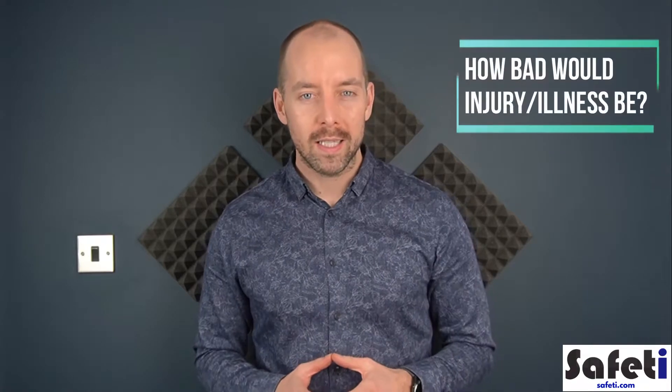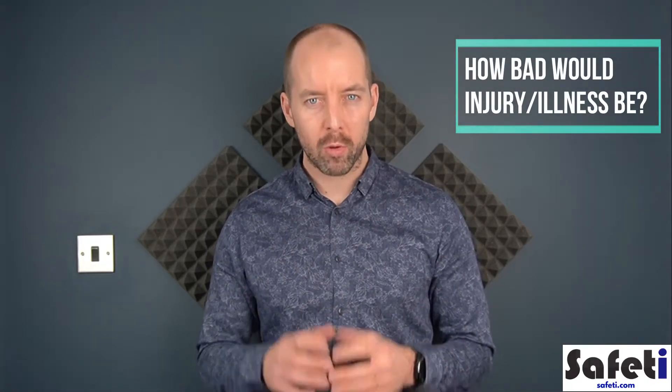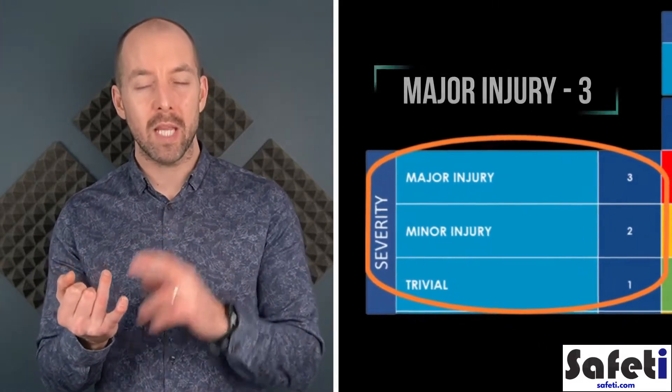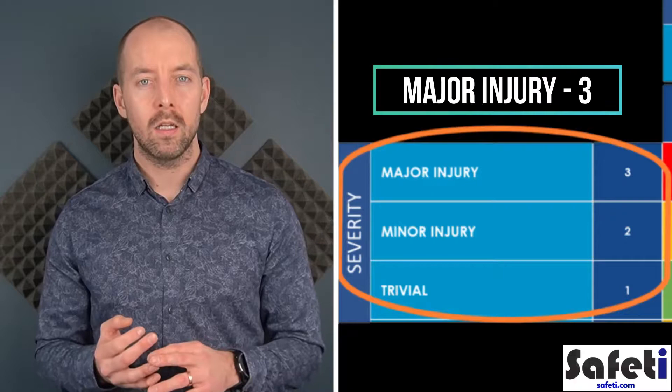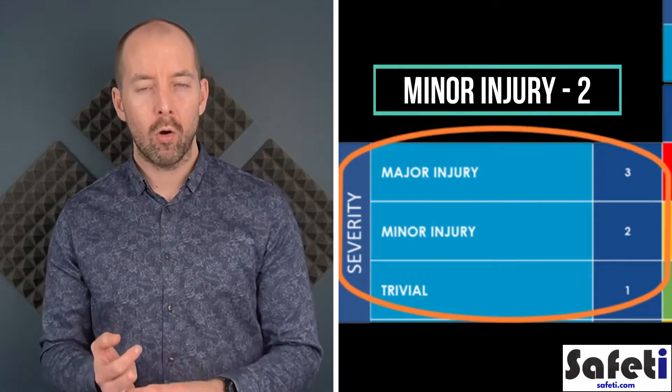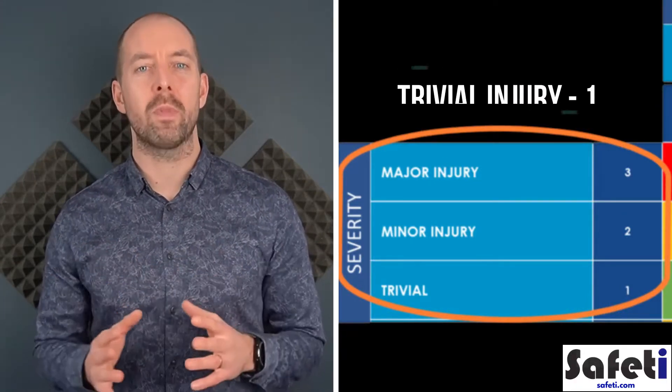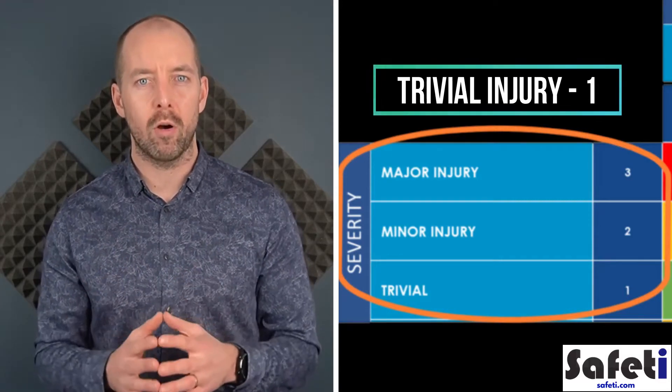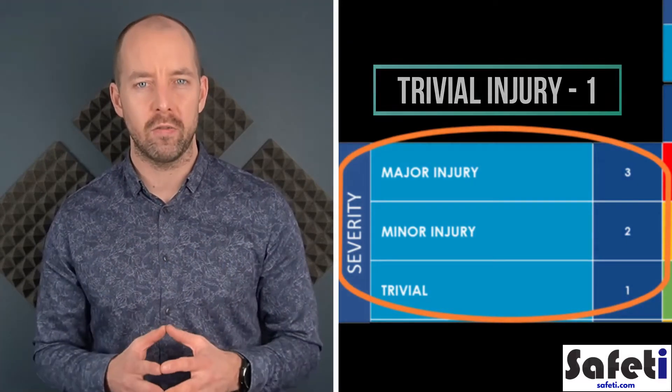We ask: how severe or how bad is the outcome going to be in terms of harm, whether injury or ill health? On this risk matrix the examples are: is it likely to be a major injury or fatality, a minor injury, or on the lesser end, a trivial injury as the outcome of the hazard identified?